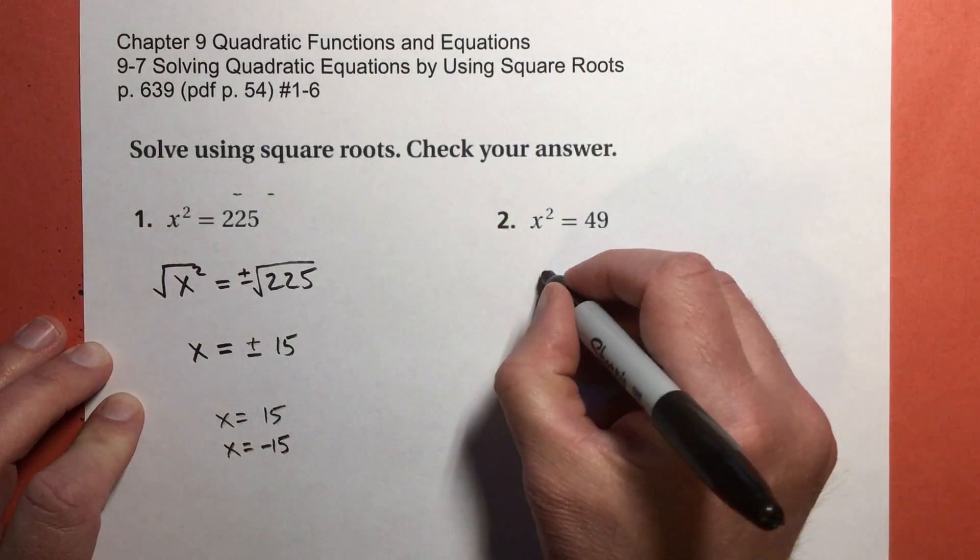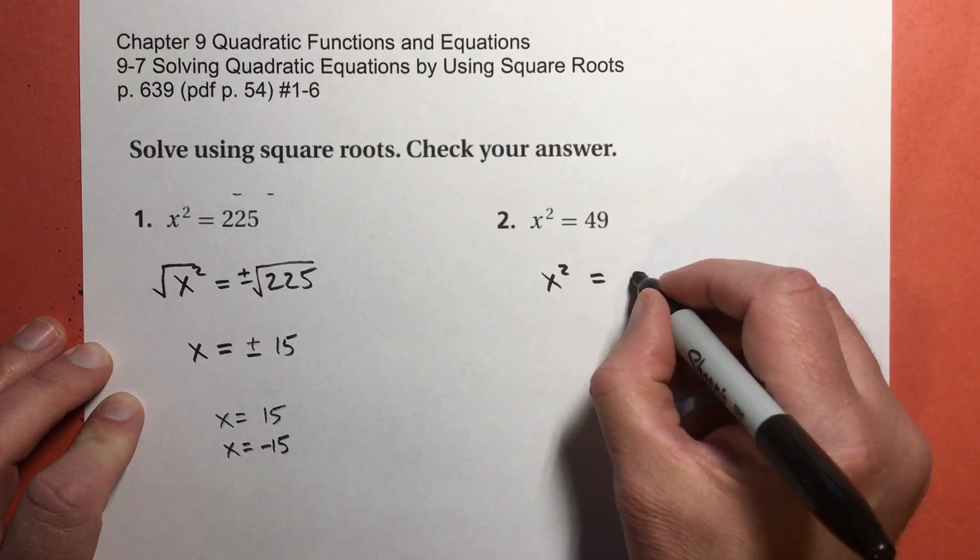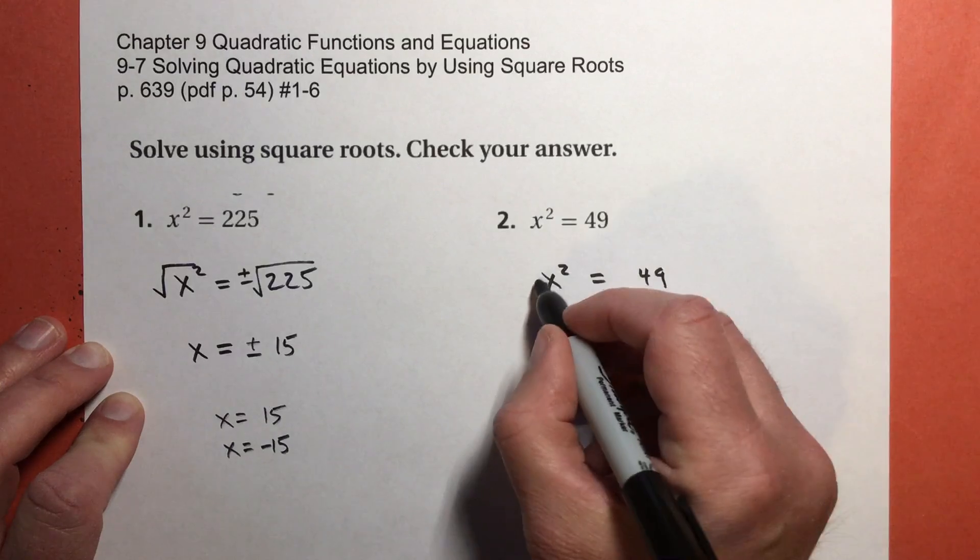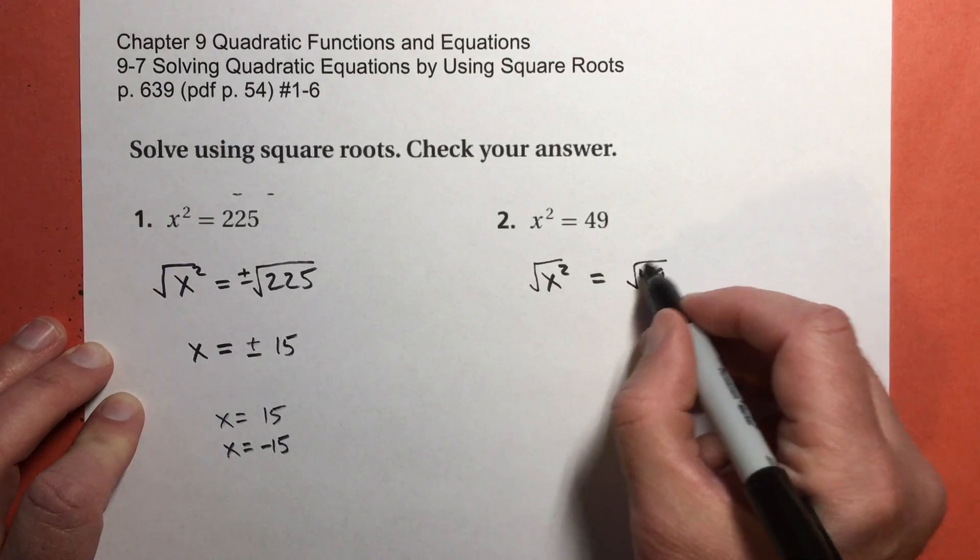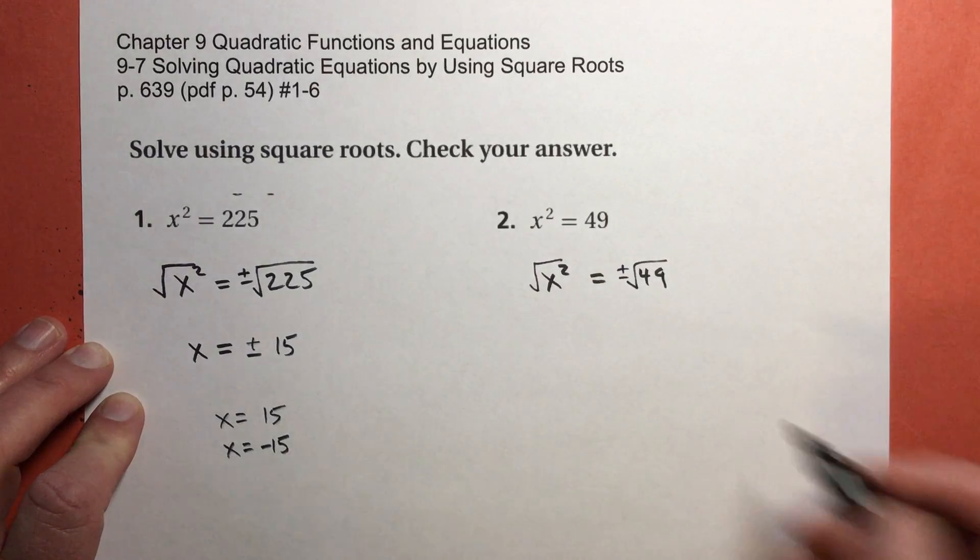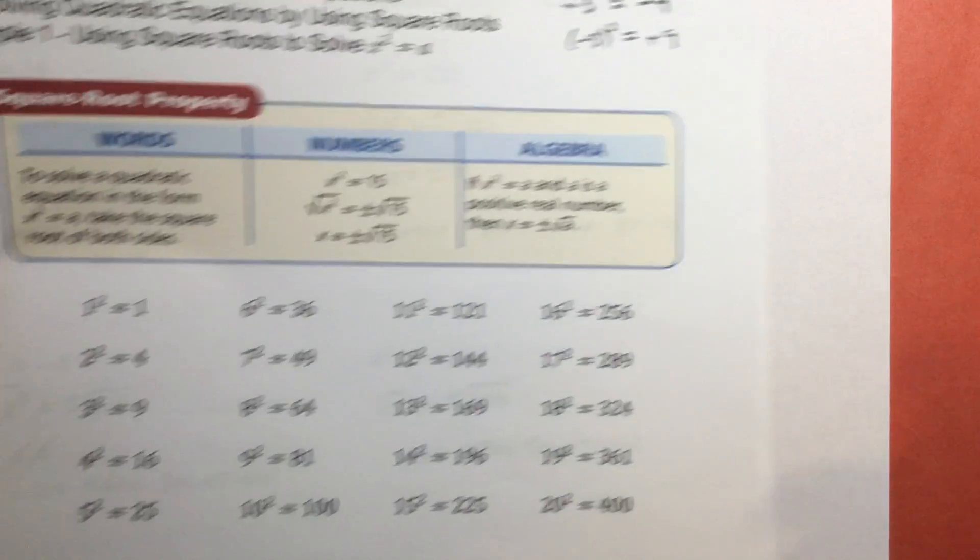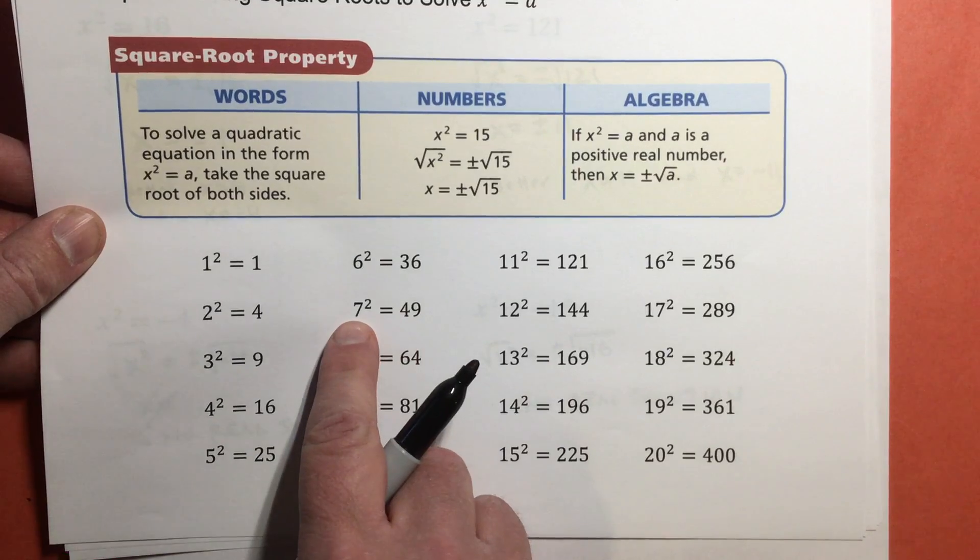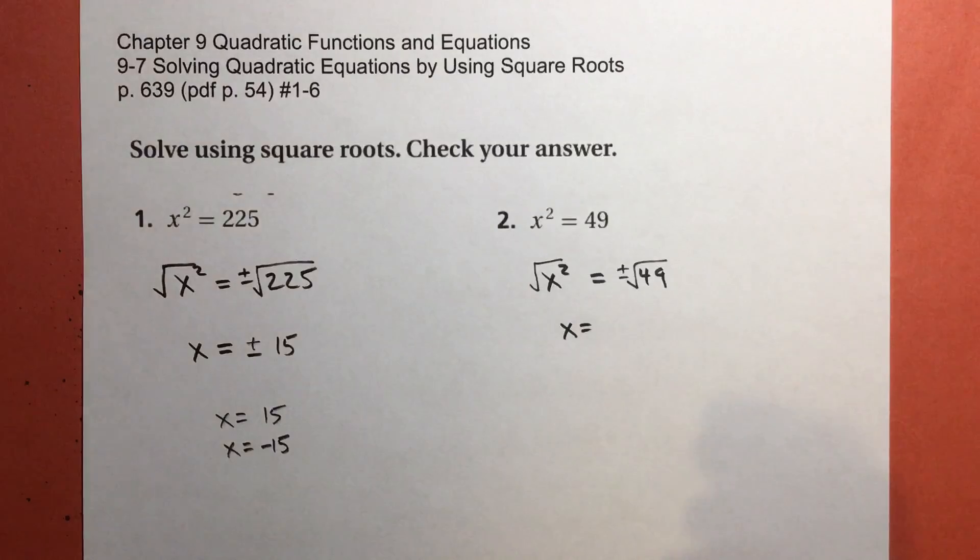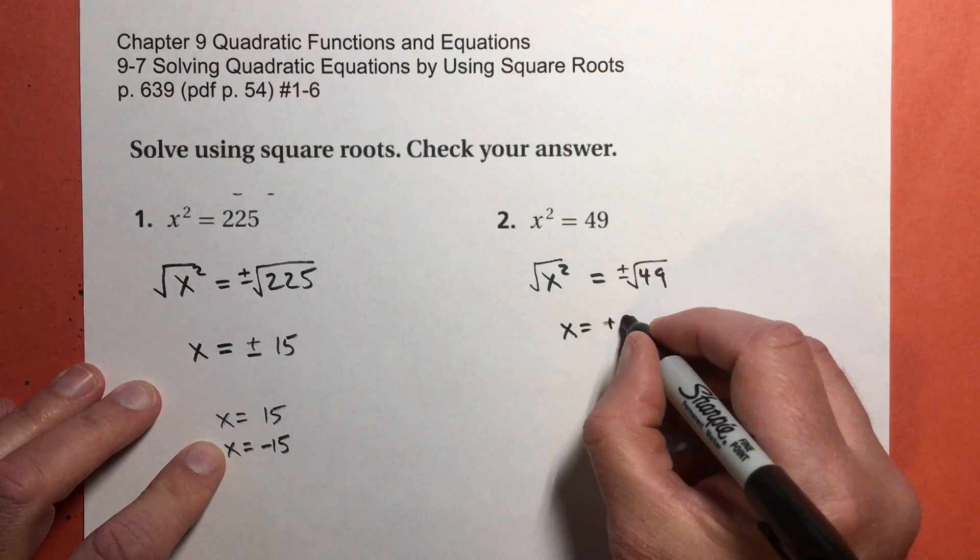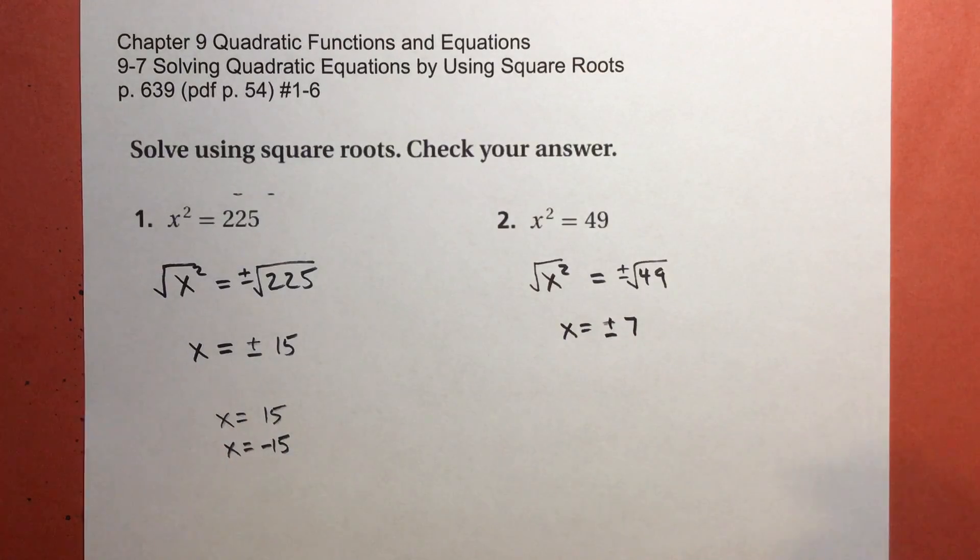Problem number 2. I have x² = 49. Take the square root of both sides. Don't forget that you get 2 of them. I get x equals... Again, I was going to write it. 49. I get 7² = 49. So this is positive 7 and negative 7. And you're probably wondering, is that all there is to that? Yep. That's all there is to it.